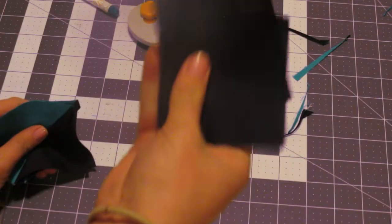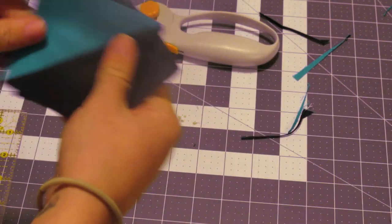And then we're going to take our other two three inch squares and we are going to take these back over to the sewing machine.